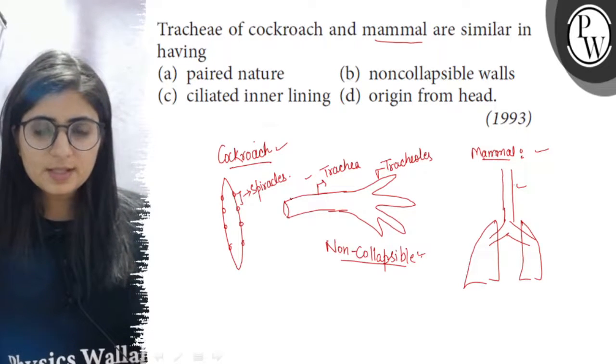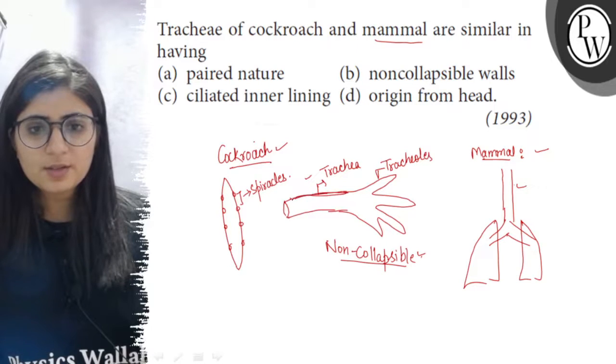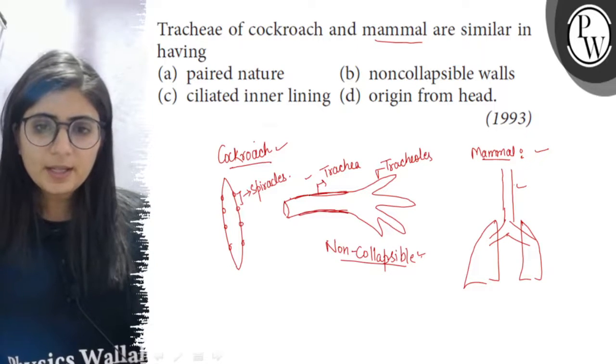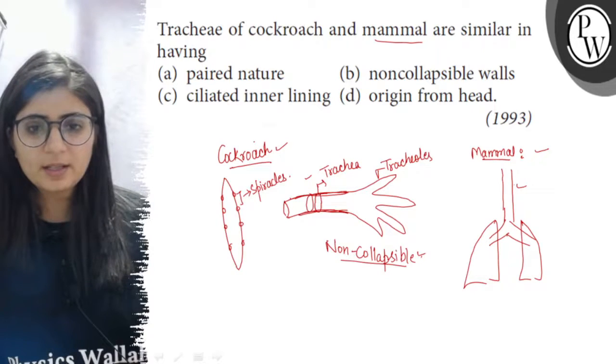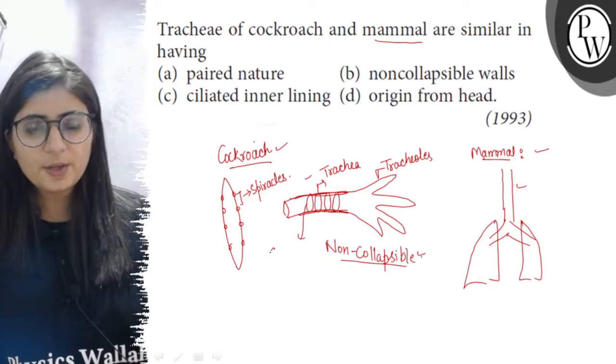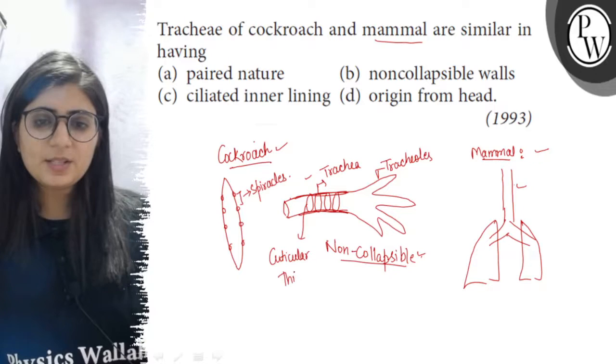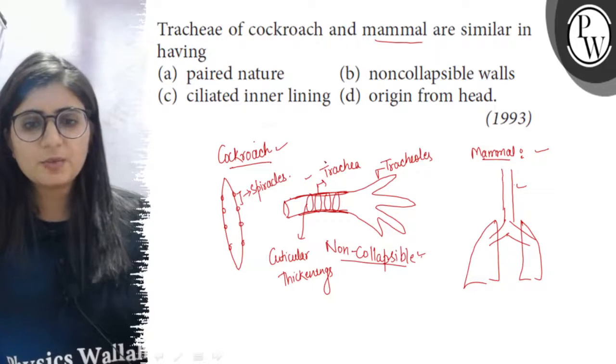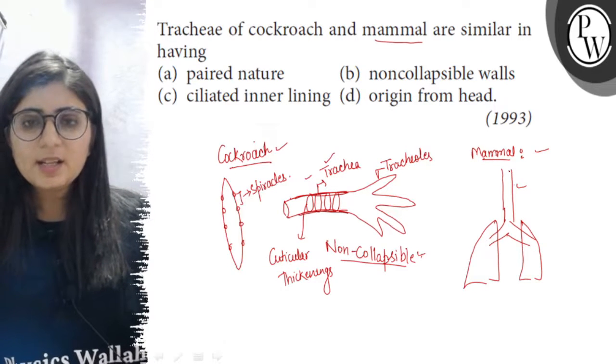In case of cockroaches there is an outer covering which is the epithelium, and inner to it there is the cuticular thickening. These cuticular thickenings which are made of chitins prevent the collapsing of these trachea.